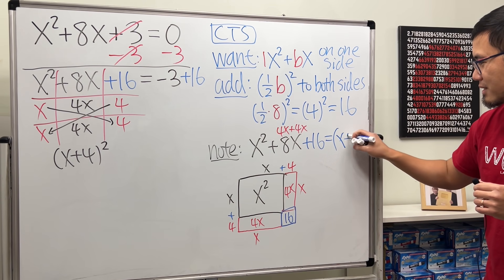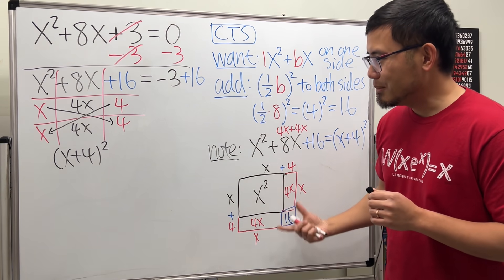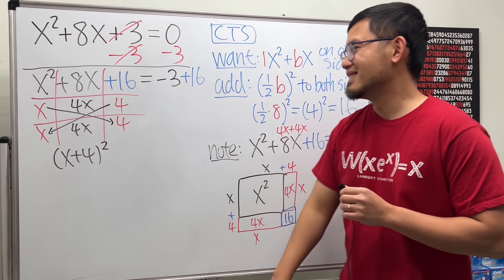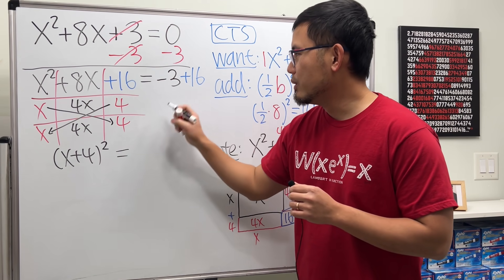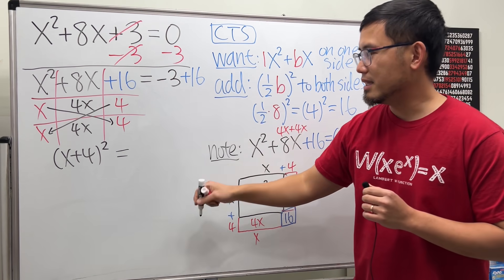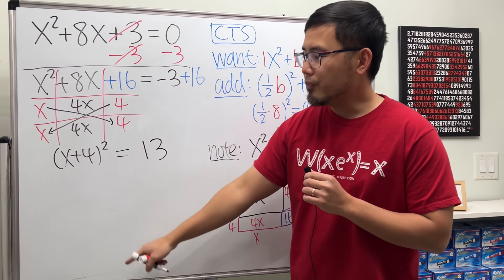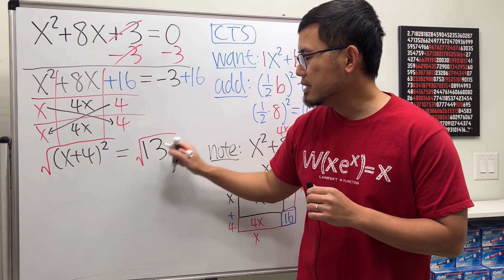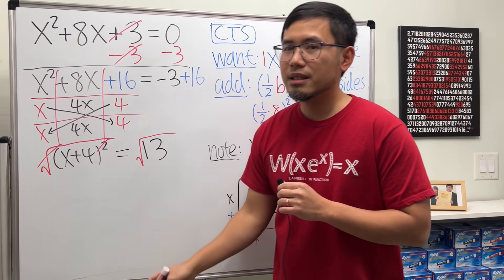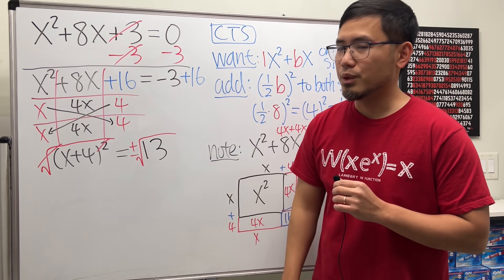All right, the rest is very straightforward because this is equal to negative 3 plus 16 which is 13. Now to get this x by itself we have to first get rid of the square. Squared, and to do so just take the square roots on both sides. Cancel this and that, and right here don't forget the plus or minus when we're solving equation.